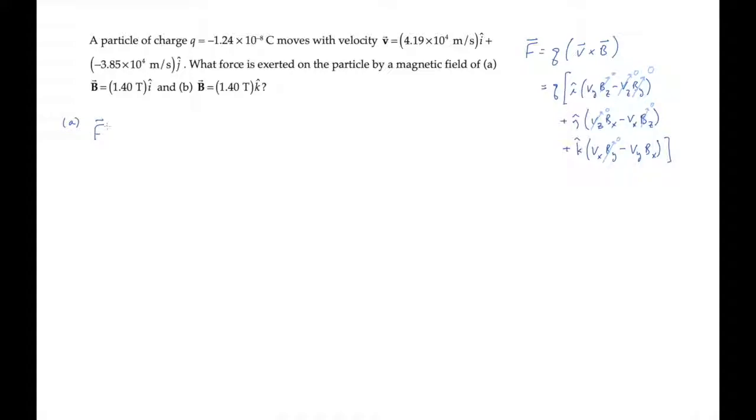That gives us these remaining terms. The magnetic force is in the z direction multiplied by q times negative vybx. We can rearrange that like this.